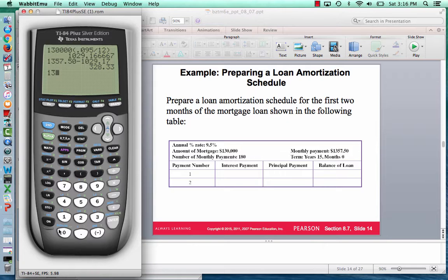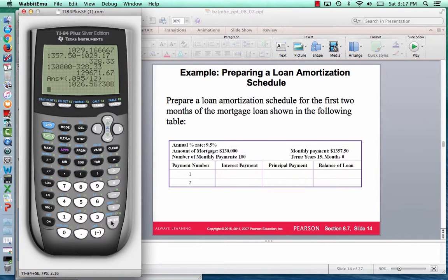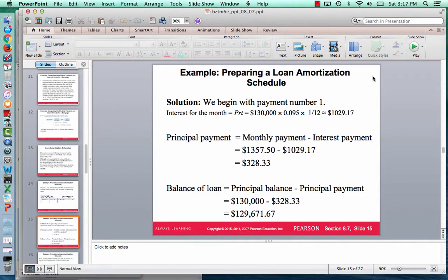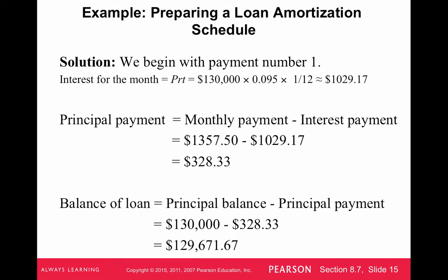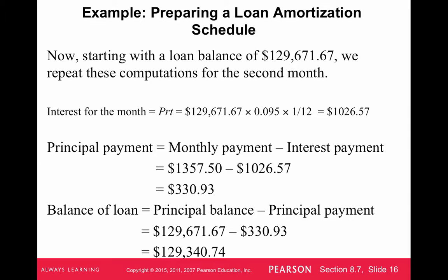After the first payment, the balance is $130,000 minus $328.33. To get the interest portion of the second payment, multiply this new balance by 0.095 divided by 12, giving $1,026.57 — slightly lower than the first month's interest. You subtract the monthly payment again to find how much goes toward principal, and that's the balance after two payments.